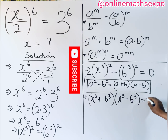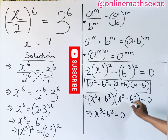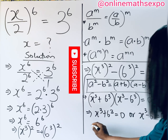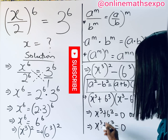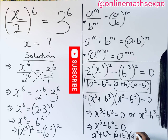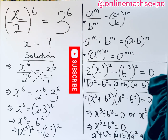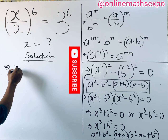Since (x³ + 6³)(x³ − 6³) = 0, it means x³ + 6³ = 0 or x³ − 6³ = 0. Let's solve the first one: x³ + 6³ = 0. Using the sum of two cubes formula — a³ + b³ = (a + b)(a² − ab + b²) — with a = x and b = 6, we get (x + 6)(x² − 6x + 36) = 0.